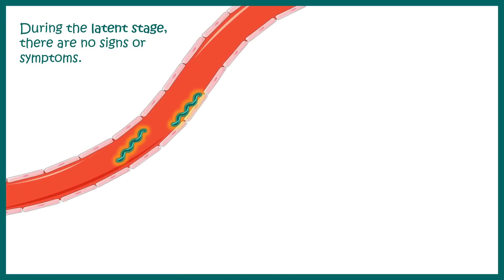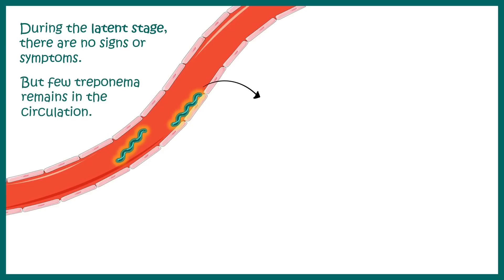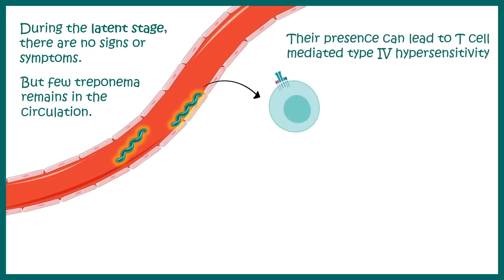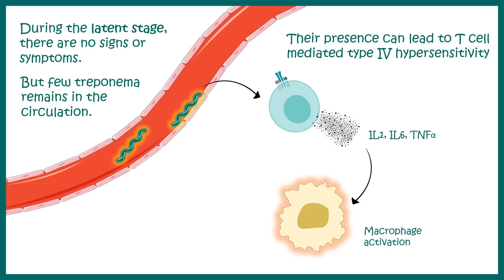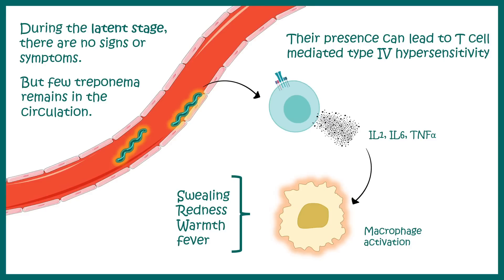During the latent stage there are no obvious signs and symptoms, and the number of bacteria is also reduced. However, the few remaining bacteria can cause serious complications. They can activate the immune system — for example, activating T helper cells, especially the Th1 subtype, leading to a type 4 hypersensitivity response. This triggers secretion of pro-inflammatory cytokines such as interleukin-1, interleukin-6, and TNF-alpha, which further activate macrophages. These activated macrophages can cause swelling, redness, warmth locally, and systemic responses including fever.